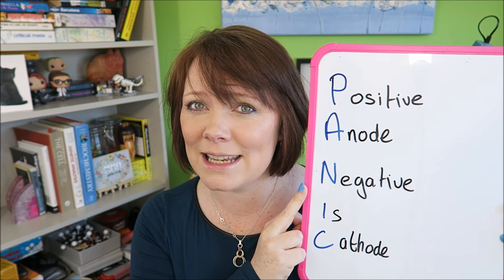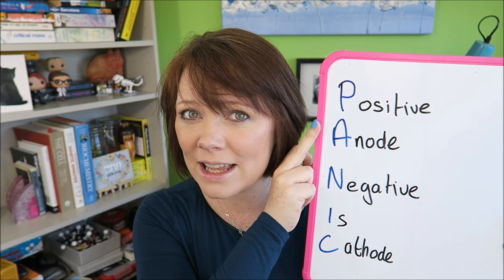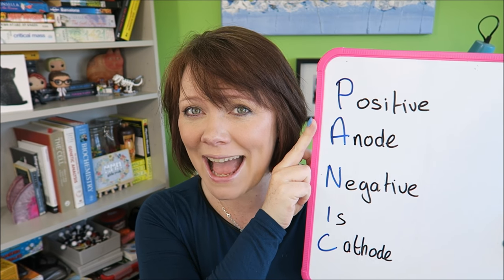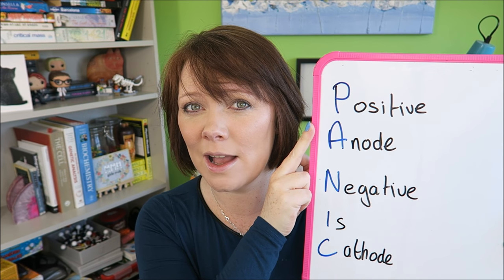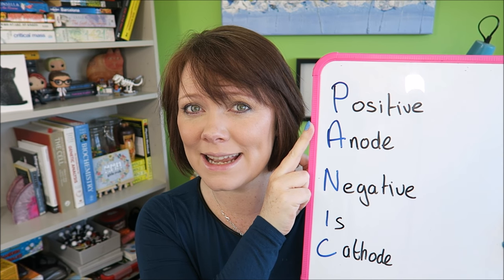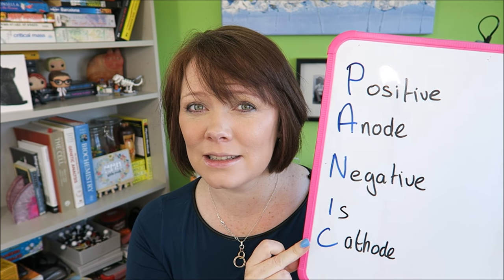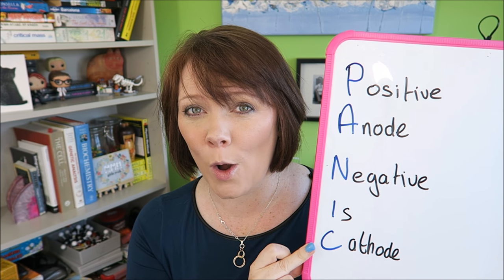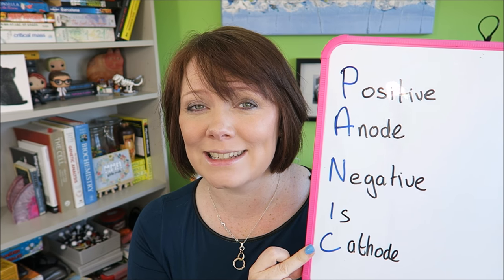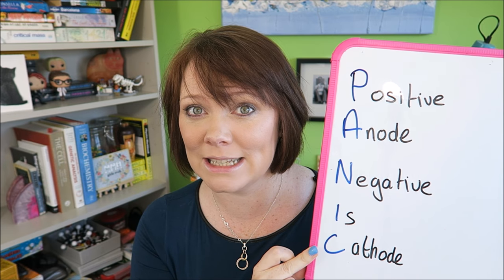Positive anode, negative is cathode. Anions go to the anode — opposites attract — so anions have to be negative. Cations go to the cathode — opposites attract — so cations have to be positive.